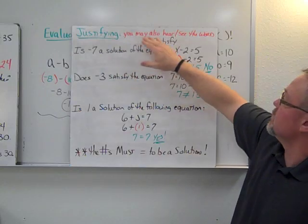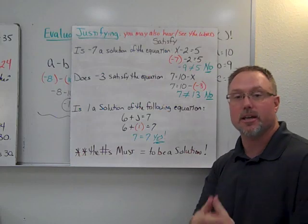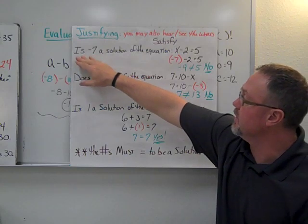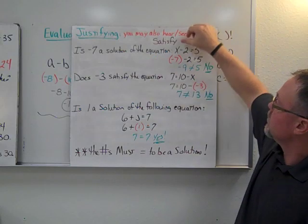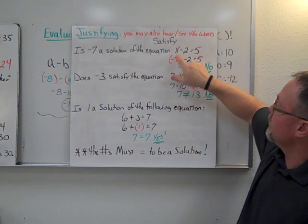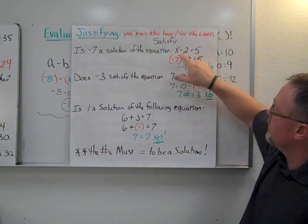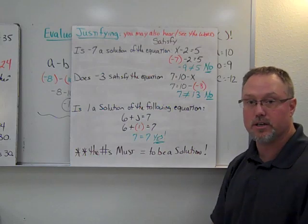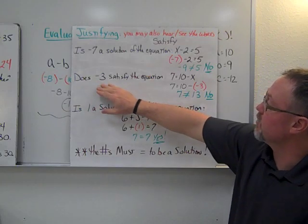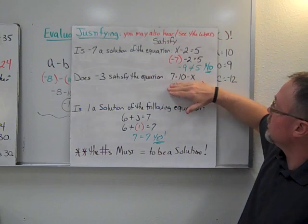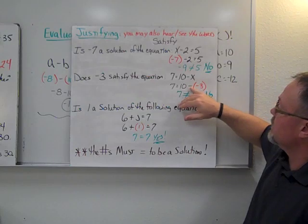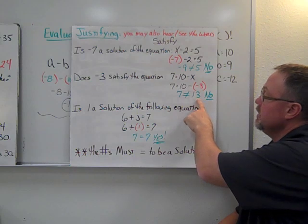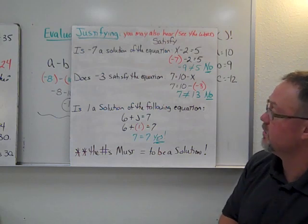The justifying part — you may also hear the word 'satisfy.' They've given you a solution and you check if it works in the equation. For example, 'is negative 7 a solution?' — substitute it in for x using parentheses, simplify that side, and check if both sides are equal. For 'does negative 3 satisfy the equation?' — substituting gives two negatives in front of the number, which simplify to positive 3, giving 13. That does not equal 7, so the answer is no.